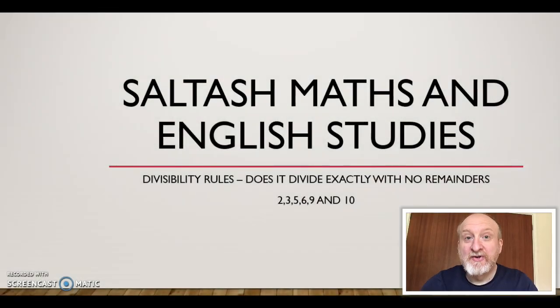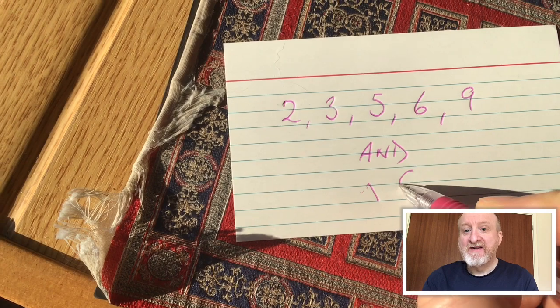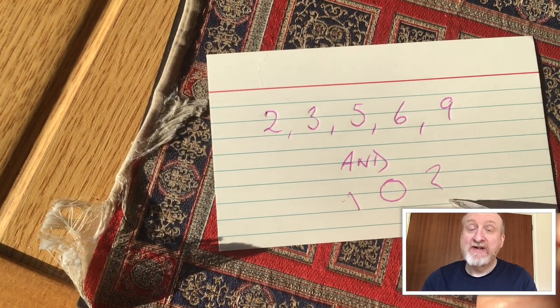Hi everybody and welcome to Saltash Maths and English Studies. Today we're going to be looking at the divisibility rules for the numbers 2, 3, 5, 10, 6, and 9. Basically you will be able to look at a number and know exactly whether that number is divisible by the numbers I've mentioned without any remainders.